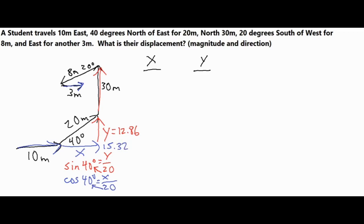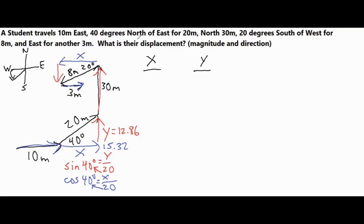We do something similar for the second angled component — closing off 20 degrees and creating an x and y component. One important thing: when you see notation like 'north of east' or 'south of west,' make sure you're familiar with your cardinal directions: north, east, south, and west. For example, '20 degrees south of west' means we start from west and tilt 20 degrees toward south. Similarly, '40 degrees north of east' means tilt 40 degrees up from directly east.